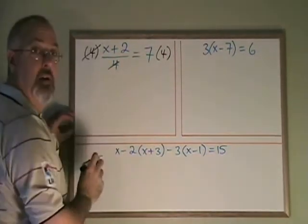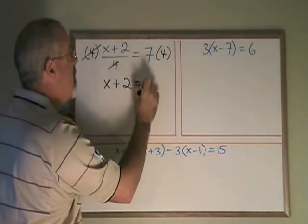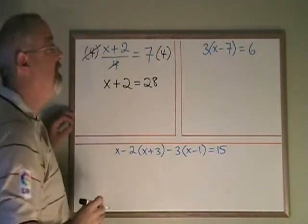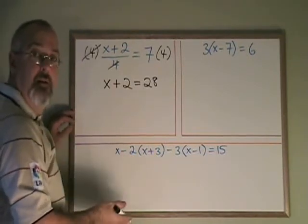These cancel. And all that's left on the left side is the x plus 2, which is equal to 28. Now we can go back to the regular skills that we know.